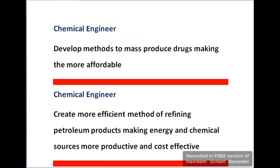Chemical engineers also develop methods to produce large quantities of raw materials, mostly for drugs. Due to mass production, the price becomes affordable for consumers.